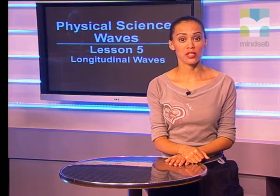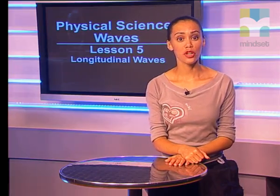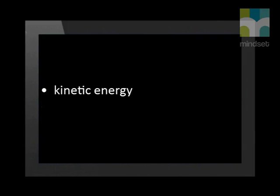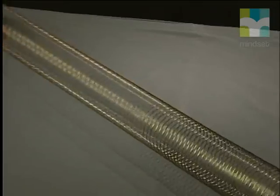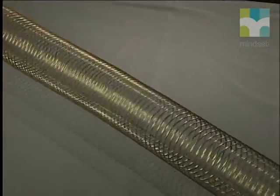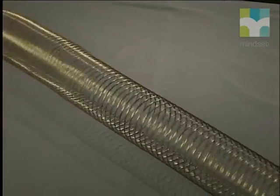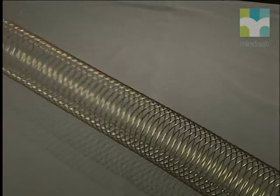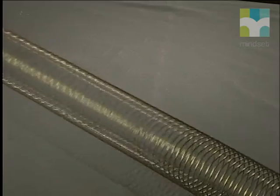The spring carries the energy which it receives from pushes and pulls and the coils move from their rest position. Therefore they have kinetic energy and they also have elastic potential energy. The elastic potential energy of the coils changes as they are pulled apart and pushed closer together.